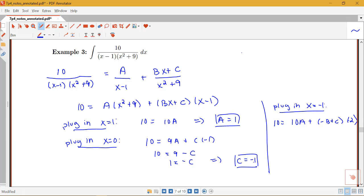But I know what A and C are equal to so I can plug those in. So I have 10 = 10 + (-B-1)(-2). So let's see, if I subtract 10 from both sides that'll be 0 = 2B + 2. Subtract 2 from both sides, I have -2 = 2B. So it looks like B is also equal to -1.